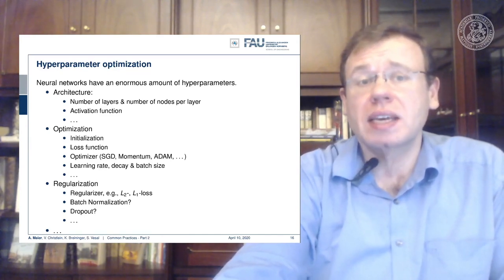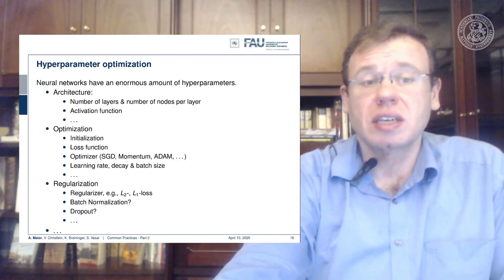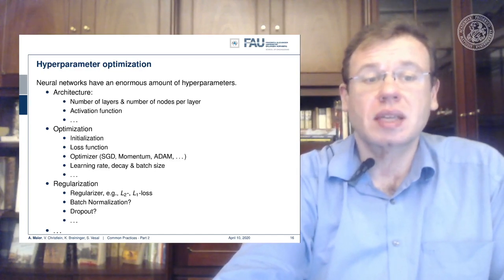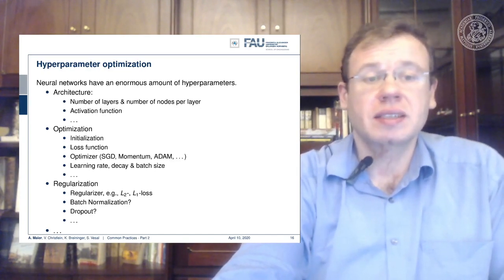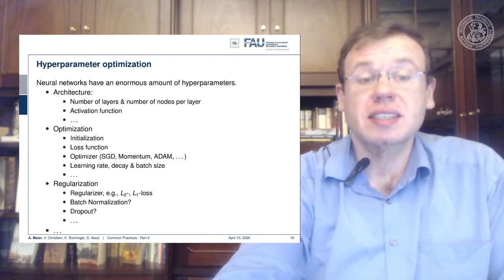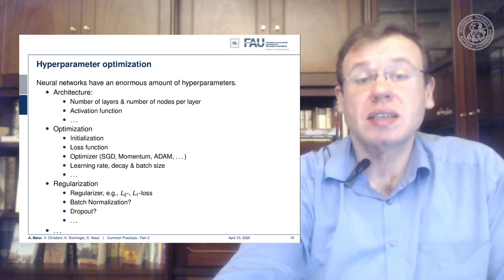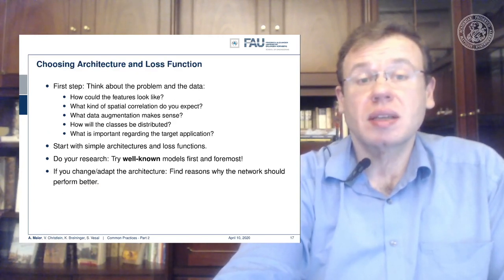You have the architecture: number of layers, number of nodes per layer, activation functions. Then you have all the parameters in the optimization: the initialization, the loss function, the optimizers like stochastic gradient descent, momentum, ADAM, learning rate, decay, and batch size. And in regularization you have different regularizers — L2, L1 loss, batch normalization, dropout, and so on. You want to somehow figure out all the parameters for those different kinds of procedures.